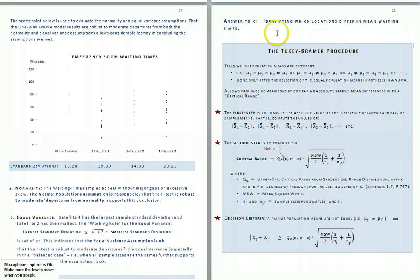We will make a separate screencast for the new procedure for today — the Tukey-Kramer procedure — which is done to determine which pairs of mean waiting times actually differ.